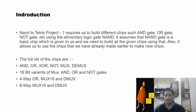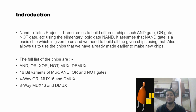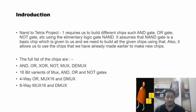Moving on to NAND to Tetris project 1 — this course requires us to build different chips like OR gate, AND gate, NOT gate, etc., using the elementary logic gate NAND. Project 1 is all about this: it assumes the NAND gate is a basic chip given to us, and we need to build all other chips using it. We can also use chips we have already made to build new ones. You can see the full list of chips in project 1.